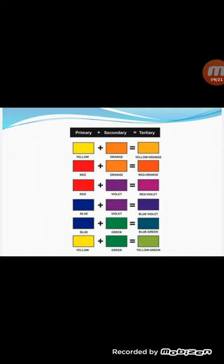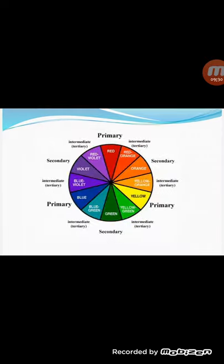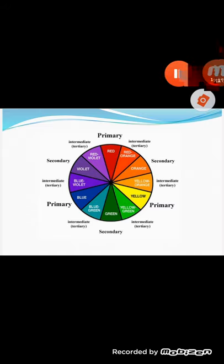Red-violet, blue-violet, blue-green, yellow-green — these are the tertiary colors. Red, blue, and yellow are primary colors. Orange, green, and violet are the secondary colors. Yellow-orange, yellow-green, blue-green, blue-violet, red-violet — these are the tertiary colors. Through this picture you can easily understand about primary, secondary, and tertiary colors.